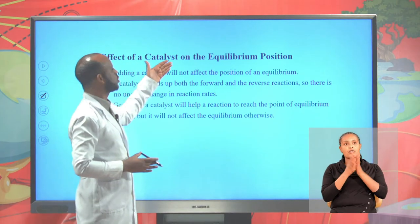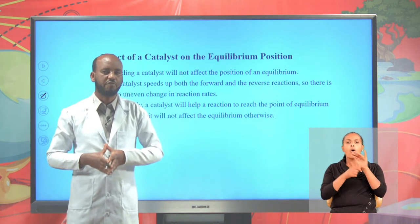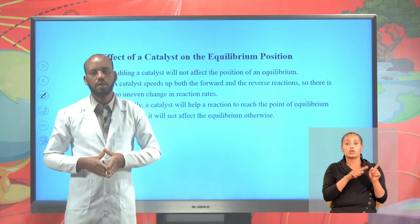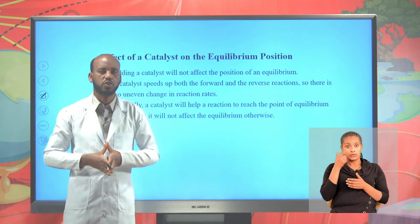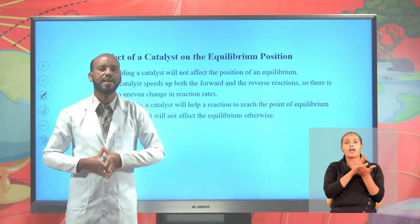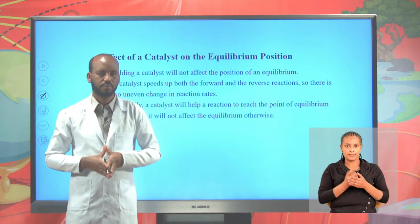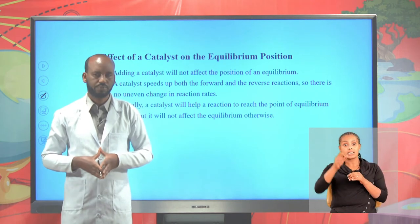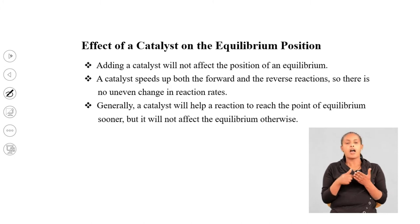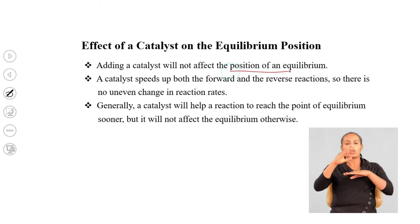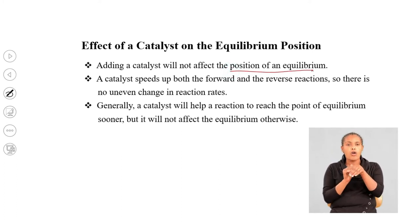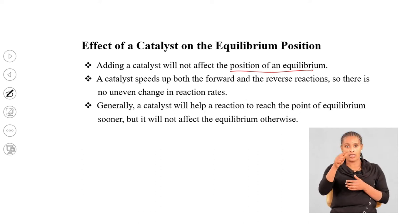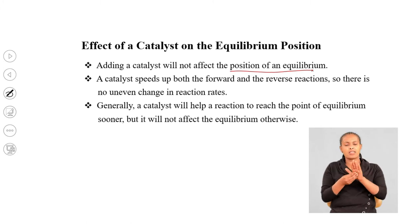Effect of a catalyst on equilibrium position: catalysts are substances that increase the rate of reaction by lowering the activation energy. Catalysts have no effect on equilibrium position - they only speed up the rate of reaction. Adding a catalyst will not affect the position of an equilibrium. A catalyst speeds up both the forward and reverse reactions equally, so there is no uneven change in reaction rate. Generally, a catalyst will help a reaction reach the point of equilibrium sooner, but will not affect the equilibrium otherwise.